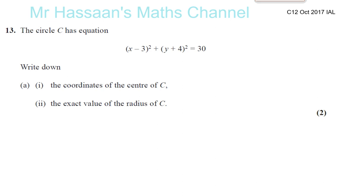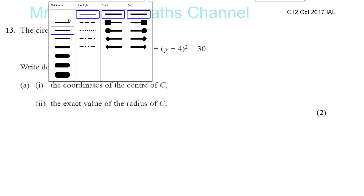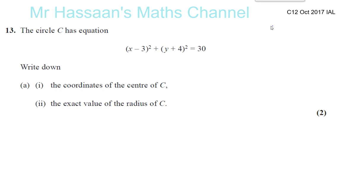Now for October 2017, C12, we have an IAL paper question again about circles. The circle C has this equation — write down the coordinates of the center of C and the exact values of the radius of C.